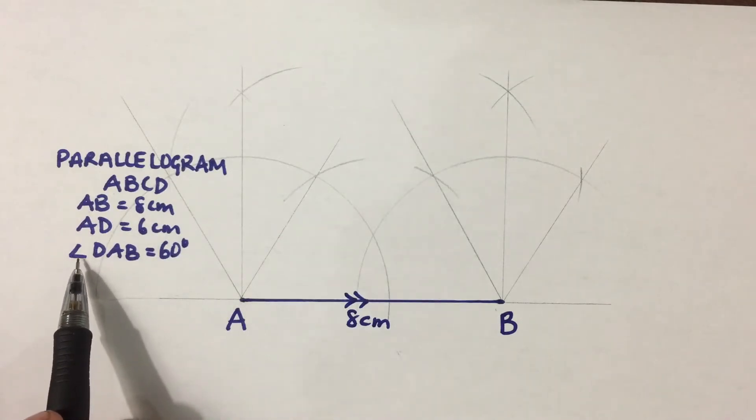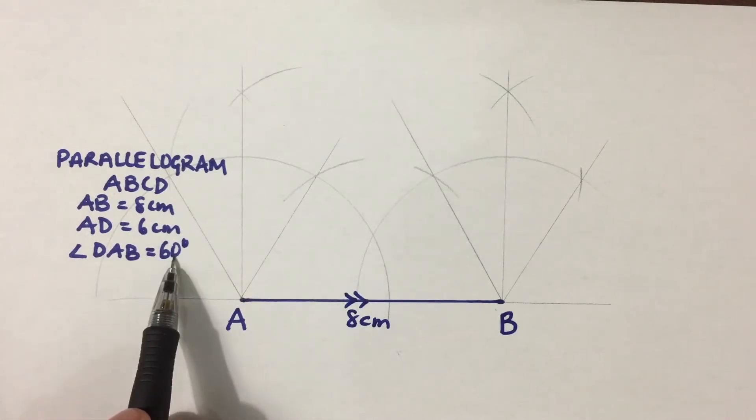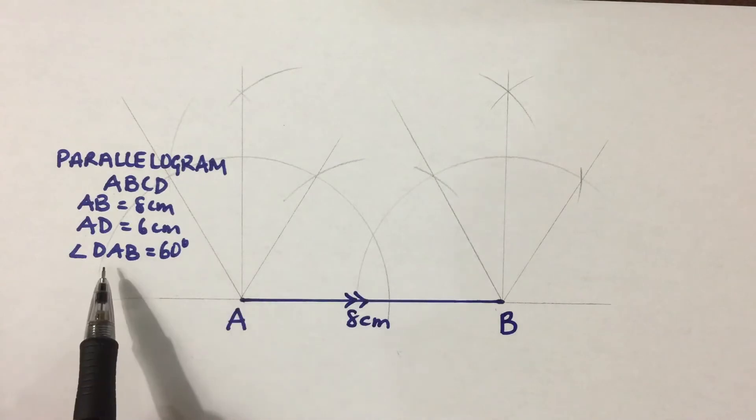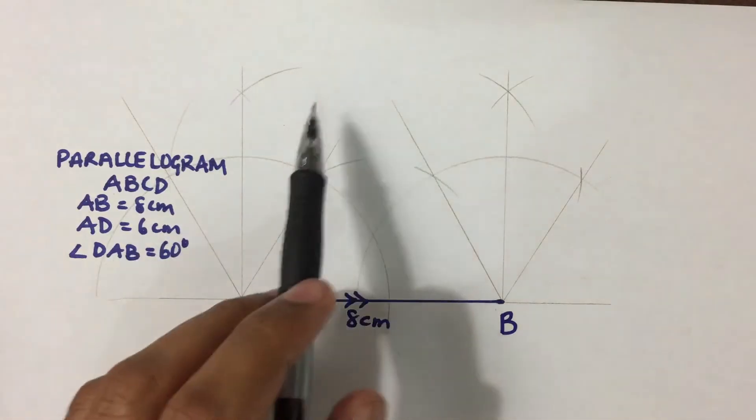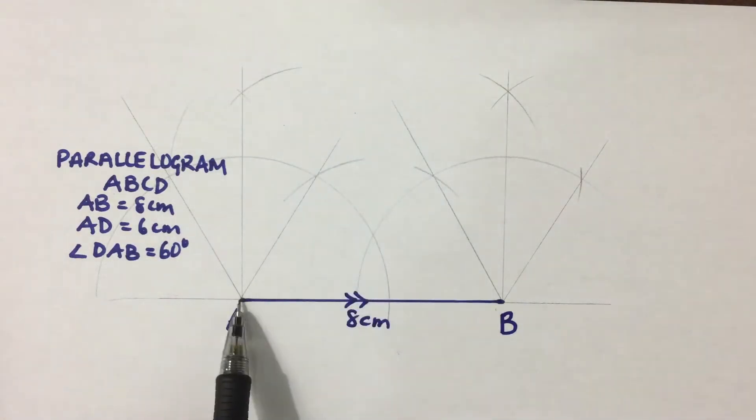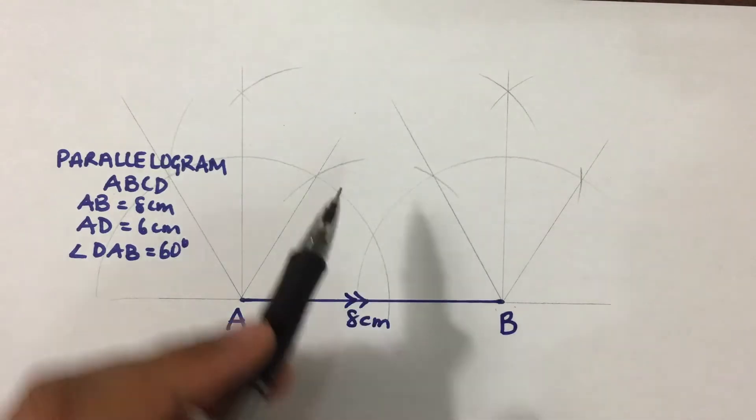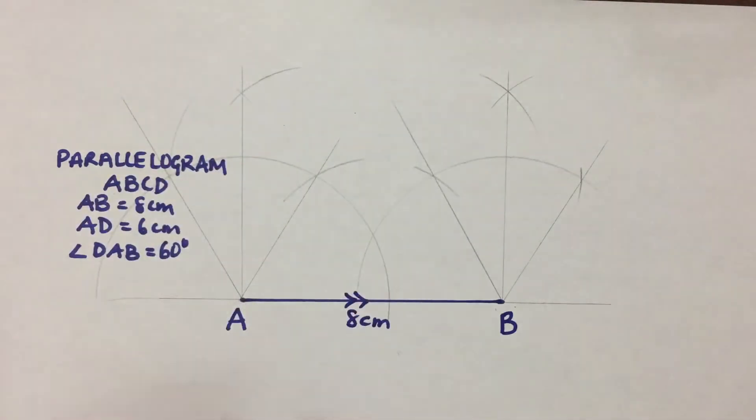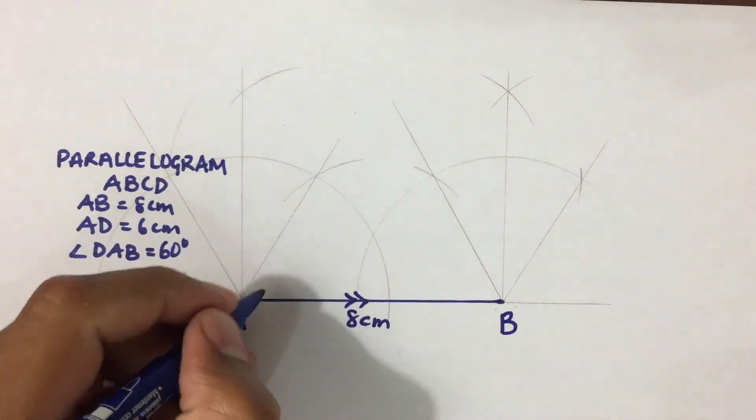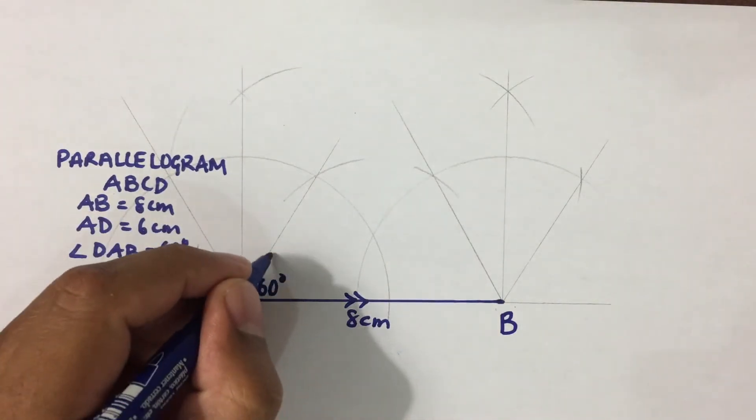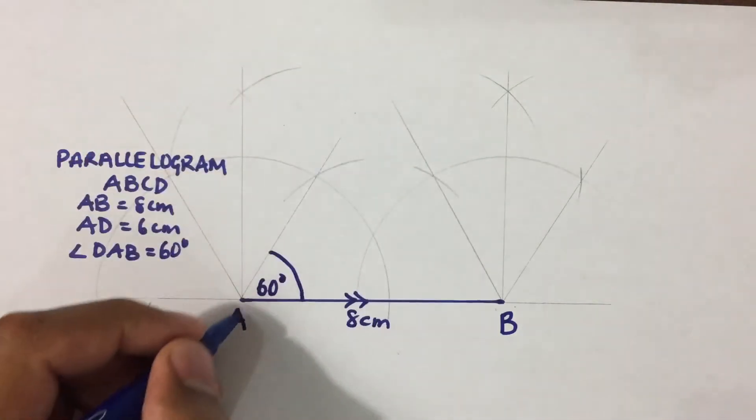And it also tells us that angle DAB is 60 degrees. So angle now, if this is angle D, A, and B is 60 degrees, so then D lies on this line here. Because that is the 60 degree line.